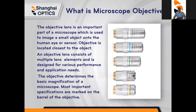What is a microscope objective? The objective lens is a very important component of a microscope used to form and enhance the image of an object. It is located closest to the object and consists of multiple lens elements that determine the basic magnification of the microscope.